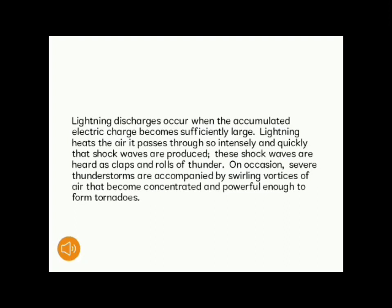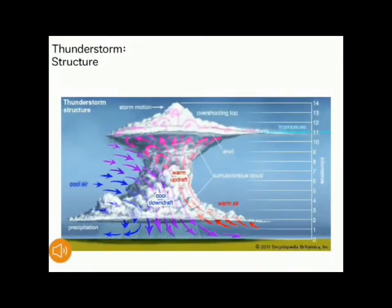On occasion, severe thunderstorms are accompanied by swirling vortices of air that become concentrated and powerful enough to form tornadoes. Regarding thunderstorm structure: when the atmosphere becomes unstable enough to form large, powerful updrafts and downdrafts, as indicated by the red and blue arrows, a towering thundercloud is built up. At times, the updrafts are strong enough to extend the top of the cloud into the tropopause, the boundary between the troposphere and the stratosphere.